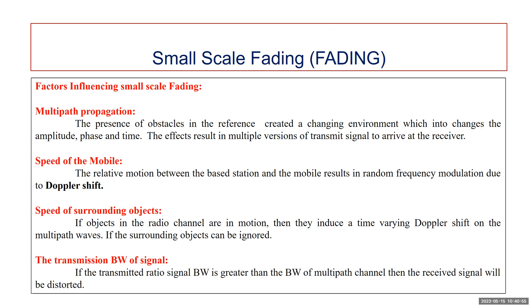The fourth factor is transmission bandwidth of the signal. If the transmitted radio signal bandwidth is greater than the bandwidth of the multipath channel, the received signal will be distorted, but the received signal strength will not fade much over a local area. The bandwidth of the channel is the coherence bandwidth, which is related to the specific transmission. If the coherence bandwidth is higher, then the transmitted signal has a narrow bandwidth compared to the channel, so the amplitude of the signal will change rapidly, but the signal will not be distorted in time.